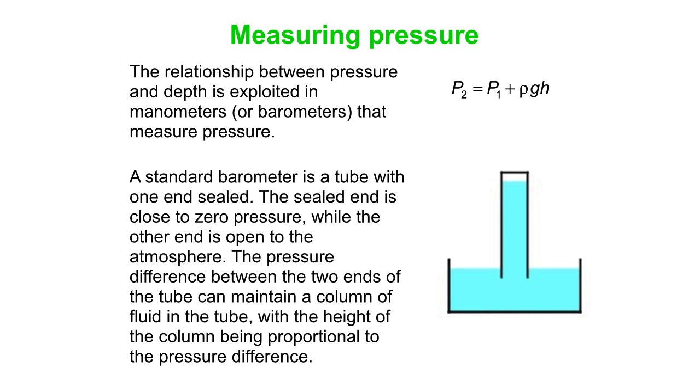So if the atmospheric pressure on the outside changes, then that will either force more fluid up into the column or let more fluid come out. So you can actually measure stuff like as the weather changes, it gets better and the pressure goes higher, or it gets worse and the pressure goes lower. You can see that with the level of the water in the water column.